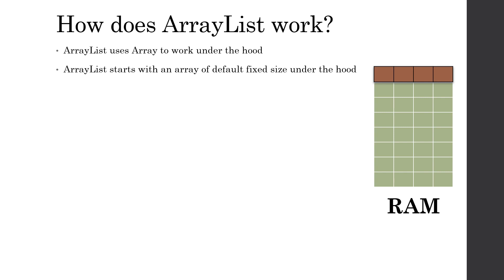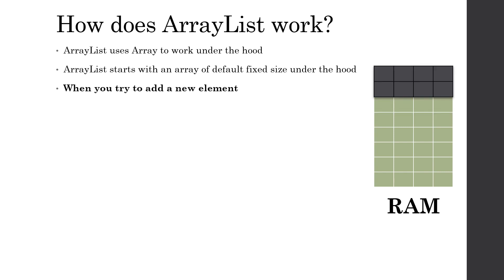But if we don't have space within that fixed-size array, the ArrayList knows the array is full. So it doubles the size of the previous array, copies the old data into the new array, and then adds the new element.